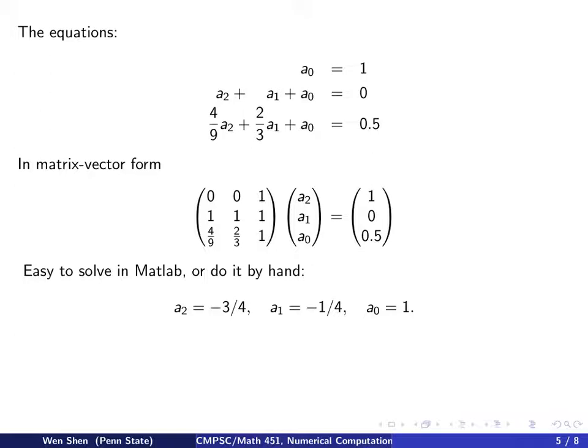So you can do it by hand. This is a 3 by 3 matrix where a0 you immediately know, so you can plug in and reduce it to a 2 by 2 matrix. If you like it, you can do it by hand, and this is the result that you will have. So a2 will be -3/4, a1 is -1/4, a0 is 1. And putting these coefficients back, we can write out the interpolation polynomial P2. P2 will be equal to a2*x^2 + a1*x + a0, where the a2, a1, a0 values we plugged in.